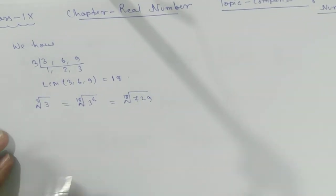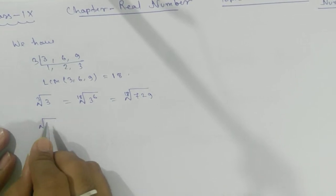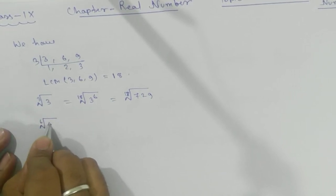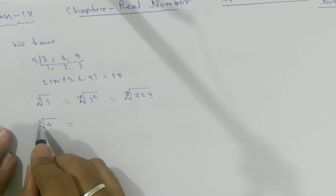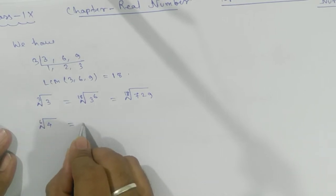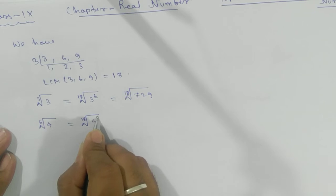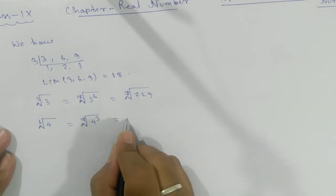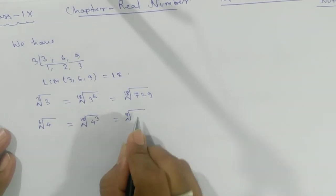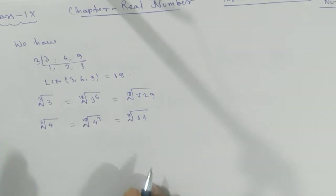Next one is 6th root of 4. What we're going to multiply with 6 to get 18? 3. That means you need to make it power 3 and this will give you 64.